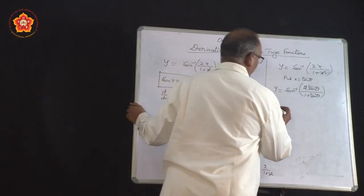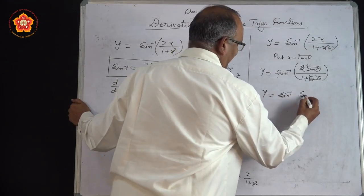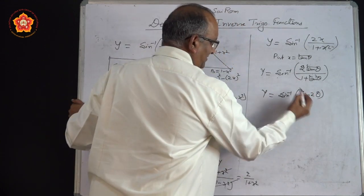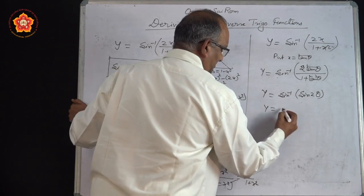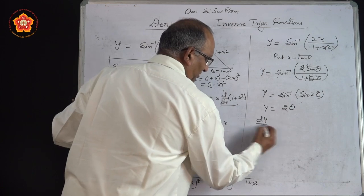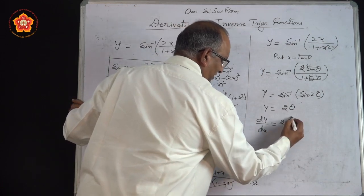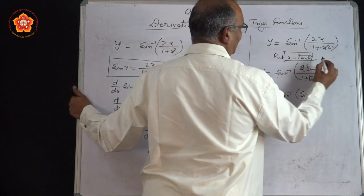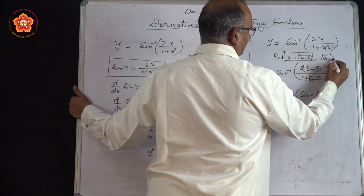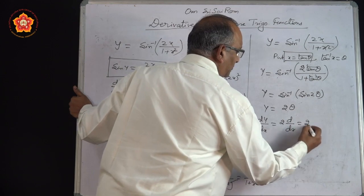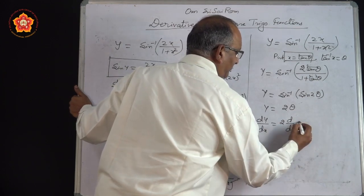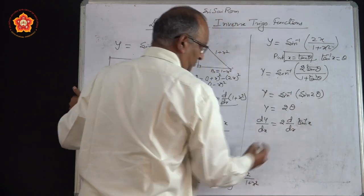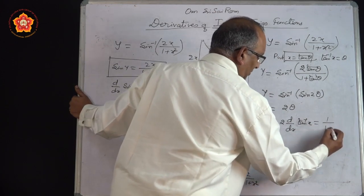So the problem becomes very simple — it becomes sin⁻¹(sin 2θ). Sin⁻¹ and sin eliminate each other, and you are left with 2θ. So if we want to find dy/dx, we only have to find d/dx of θ. What is θ? If x = tan θ, then θ = tan⁻¹ x. So we have 2 · d/dx(tan⁻¹ x). And d/dx of tan⁻¹ x is 1/(1+x²).